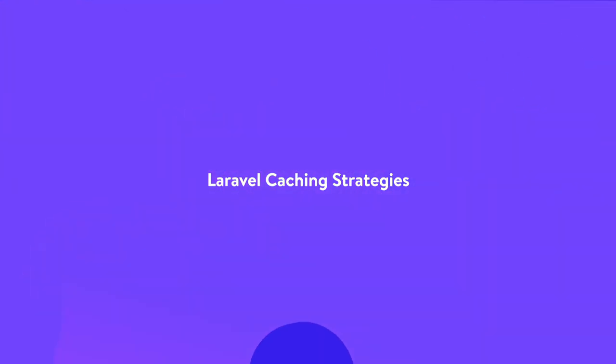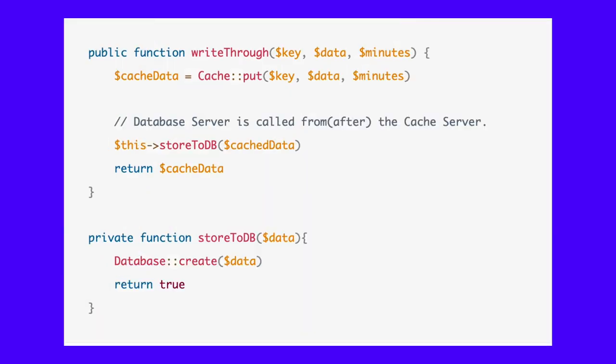Depending on your application use case and data structure, several different cache strategies are likely available to you. You can even create a custom strategy to fit your needs. In the write-through strategy, the cache server sits between the requests and the database server, making every write operation go through the cache server before going to the database server. The write-through caching strategy is similar to the read-through strategy. You can implement this strategy with the Laravel cache with the following code.